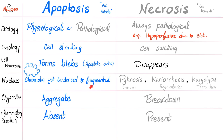In apoptosis, the nucleus is condensed and fragmented, and organelles aggregate. Conversely, in necrosis, the membrane will disappear, and then the nucleus will also disappear through three steps: pyknosis (shrinking of the nucleus), karyorrhexis (nucleus fragmentation), and karyolysis (nucleus dissolution and destruction). The organelles will break down.